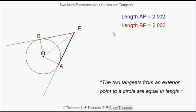So what's the theorem there? The two tangents from an exterior point to a circle are equal in length. That's another rule.